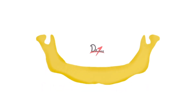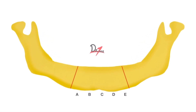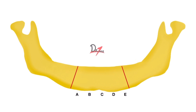First of all, we'll do the treatment planning. The mandible is divided into three regions. The anterior region is divided further into A, B, C, D, and E, which starts from the right-hand side of the patient. These are the five implant sites.